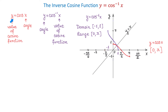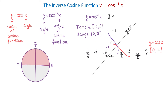Now let's see what we exactly find when we evaluate an inverse cosine function. In the function y equals cosine of x, x represents the angle and y represents the value of the cosine function. But in the inverse cosine function, y represents the angle and x represents the value of the cosine function. Here is something very important to remember: when we use the inverse cosine function to find an angle, that angle will be on the interval from 0 to pi, as we can see on the unit circle.